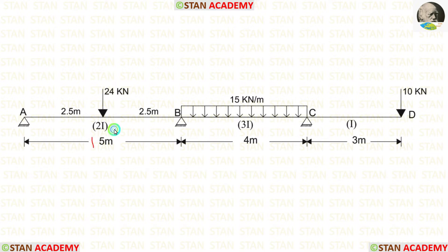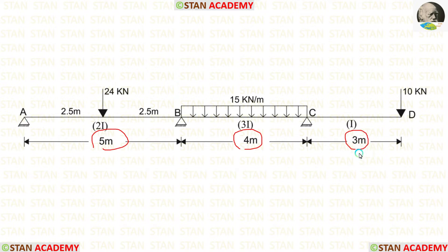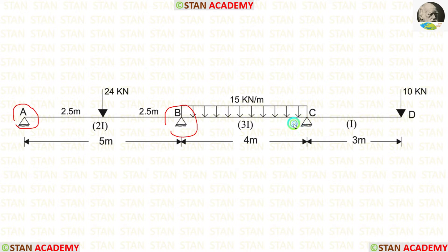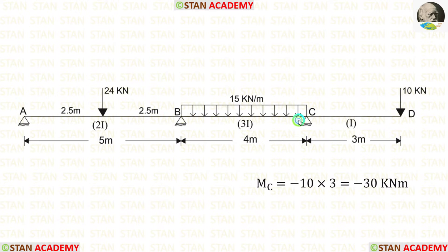The length of AB is 5 meters, the length of BC is 4 meters, and the overhanging span is 3 meters. At points A, B, and C, there are hinged supports.